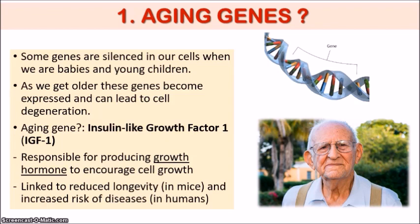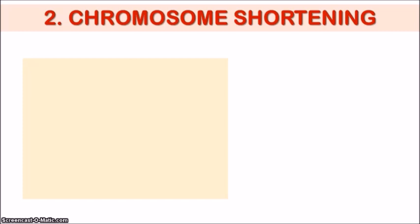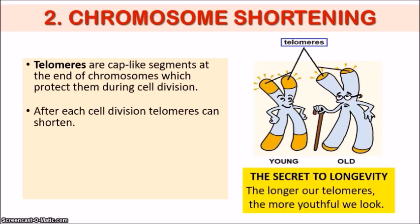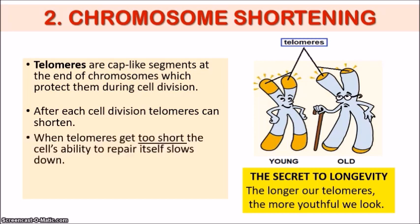Moving on, let's look at the second factor: chromosome shortening. Telomeres are cap-like segments at the end of chromosomes which protect them during cell division. Scientists have discovered that after each cell division, telomeres can actually shorten. When telomeres get too short, the cell's ability to repair itself slows down, and cell replication can eventually stop. Therefore, the secret to longevity is apparently that the longer our telomeres are, the more youthful we will look — meaning if you have short telomeres, your cells could be prone to faster degeneration.